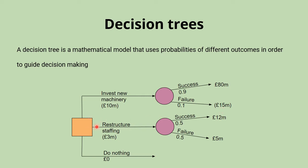We could decide to restructure our staffing, which gives us a 50 percent chance of success, in which case it will offer us a return of 12 million pounds, and a 50 percent chance of failure, in which case offering us a return of five million pounds. Then finally, we might decide to do nothing with a cost of zero.